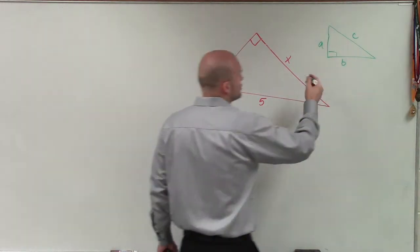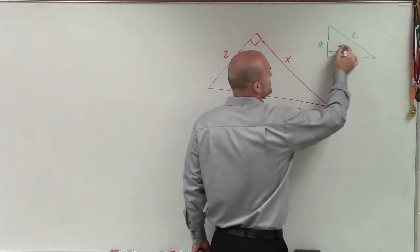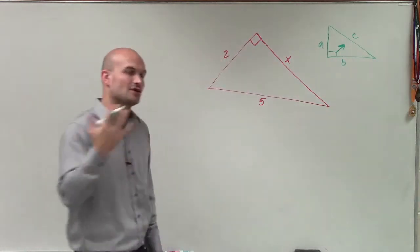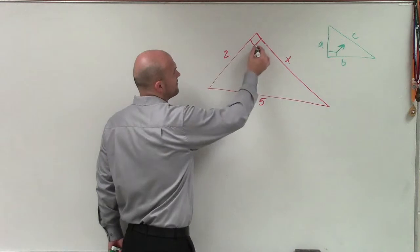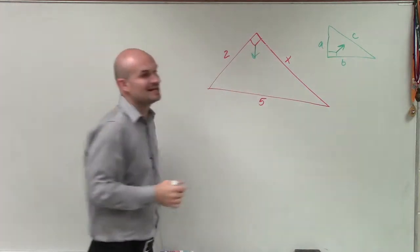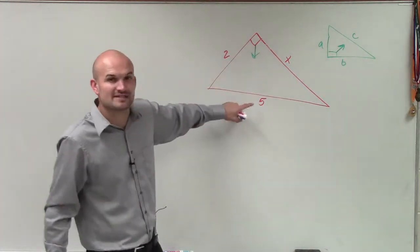Because remember, when dealing with a right triangle, the hypotenuse, which is the value of C, is directly across from our 90-degree symbol. So therefore, if I draw an arrow at the end of my 90-degree, I can see that 5 is going to be my C.